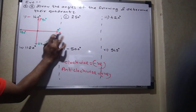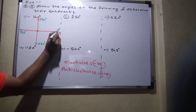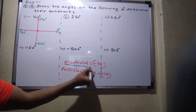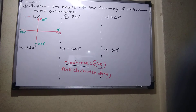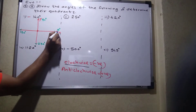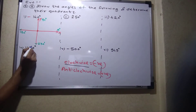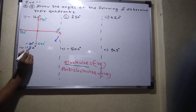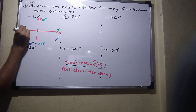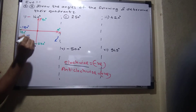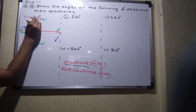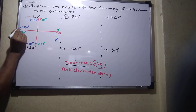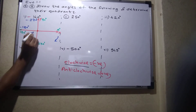For minus 140, you start from zero and go clockwise. Going clockwise: this is minus 90, this is minus 180, and this is minus 270. So minus 140 will come between minus 90 and minus 180.